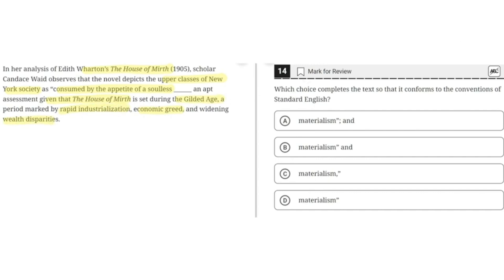Option A says materialism, semicolon, and. This is incorrect for a few reasons. The semicolon is placed outside the quotation marks, which is incorrect. Also, a semicolon is used to connect two independent clauses, but here there's only one independent clause and a supplementary phrase. So A is incorrect.